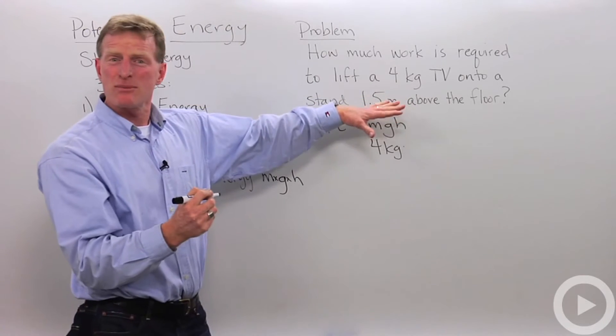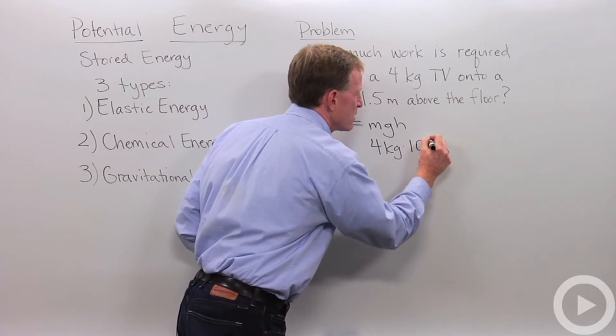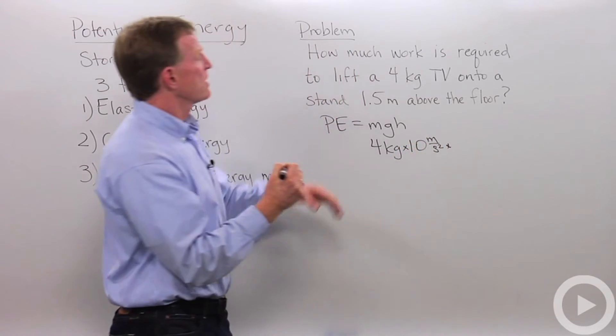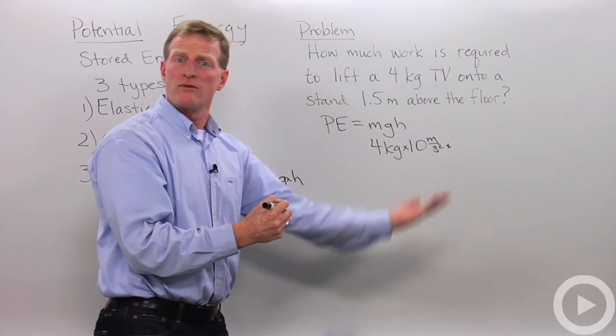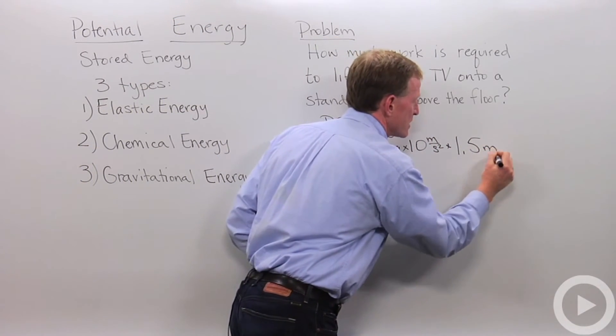Our gravity here, I'm going to simplify 9.8 meters per second squared to 10 meters per second squared. And those are times each other. And then the height we're moving it up is 1.5 meters.